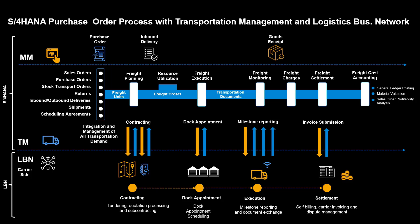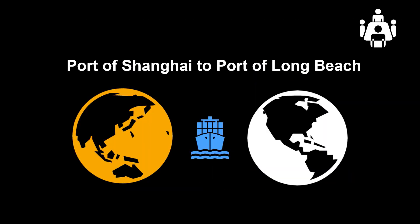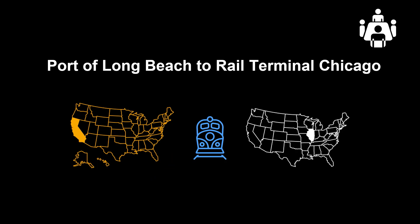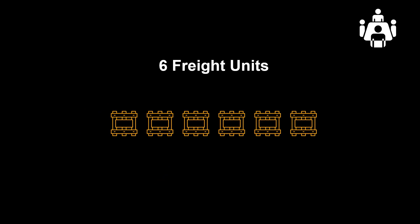In previous videos, we have focused on the end-to-end process in S4 HANA transportation management. In this video, we will focus on the planning part only. We have goods that need to be moved from Shanghai to Detroit. We will first move them by vessel from Port of Shanghai to Port of Long Beach, then transload and move the goods by rail from Port of Long Beach to the rail terminal in Chicago. The last part of the journey will be by truck from the rail terminal to our plant in Detroit. The total quantity has been split into six freight units by weight and volume limits defined with freight unit builder rules.